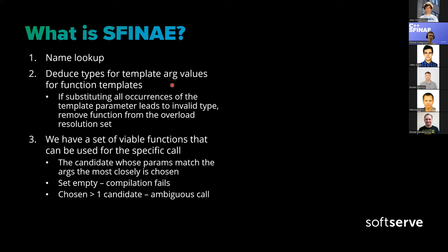There are two corner cases: first, when the set is empty and compilation fails — that's what happened with our int example the first time, giving "no function to call" error. Second, when we have more than one candidate that are deemed an equal match, which is also an error with an "ambiguous call" description.